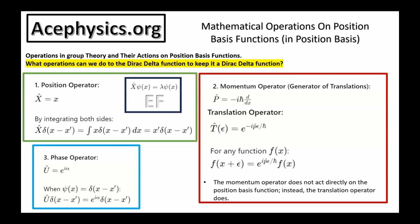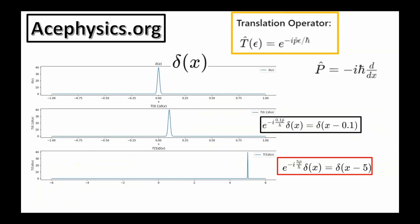These operations are crucial for understanding quantum mechanics. If I operate e to the i p epsilon over h-bar onto any function f of x, it will give me f of x plus epsilon. For example, e to the i p epsilon over h-bar acting on delta of x is equal to delta of x plus epsilon. This slide shows how applying the translation operator to the Dirac delta function moves it to a new position.